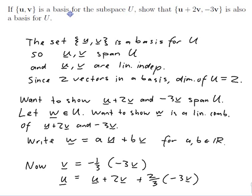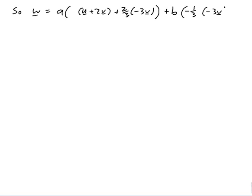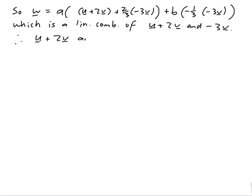So u and v are linear combinations of my new basis vectors, so therefore w is as well. So w is equal to a times u, but u was u plus 2v plus 2 thirds of minus 3v, plus b of v, but v was minus a third of minus 3v. And that's a linear combination of my new basis vectors, which is a linear combination of u plus 2v and minus 3v. So therefore u plus 2v and minus 3v span U.